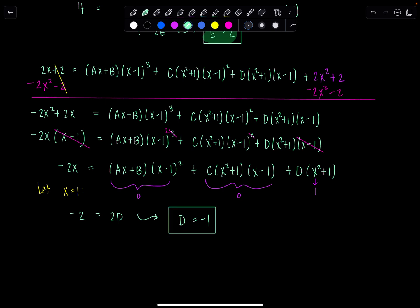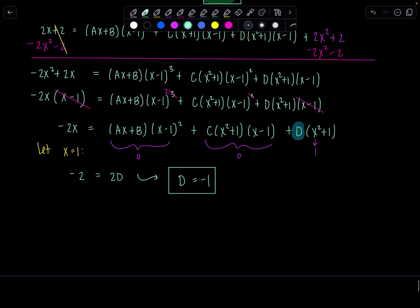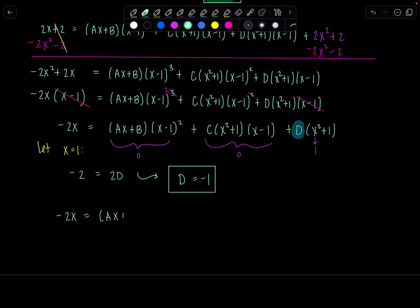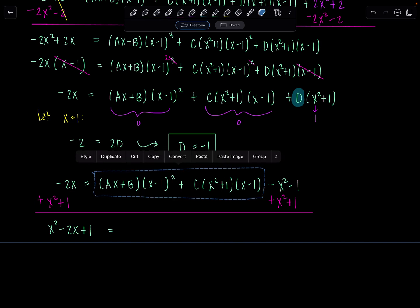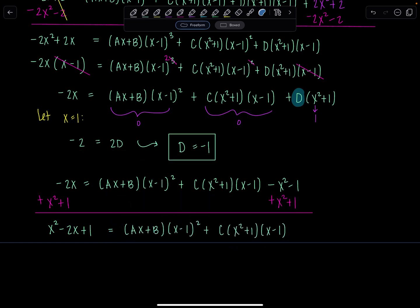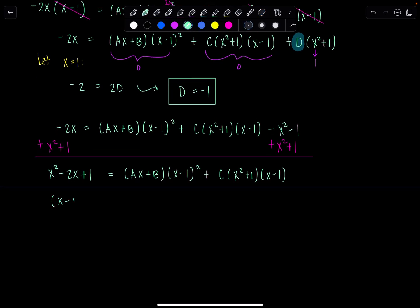So if d is negative 1, where do I go next? I'm going to substitute in negative 1 there, distribute, and repeat the process that we just did. So I have negative 2x equals ax plus b times x minus 1 squared plus c times x squared plus 1 times x minus 1. Now d is negative 1, so minus x squared minus 1. And then now I'm going to move those over to the other side, plus x squared plus 1. And then on the left-hand side, we'll have x squared minus 2x plus 1 equals all of this. And x squared minus 2x plus 1, that factors. That's x minus 1 quantity squared.